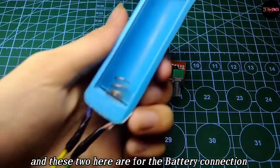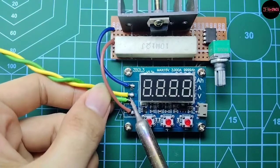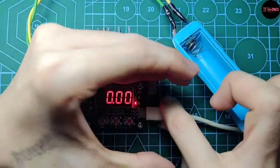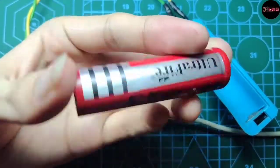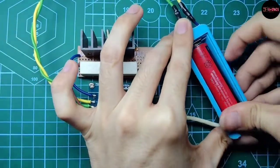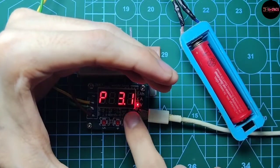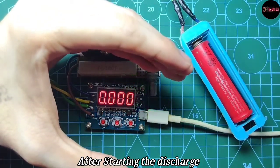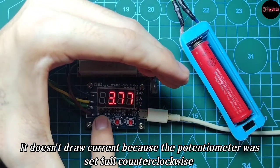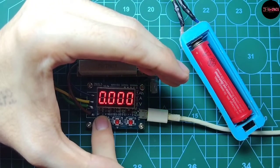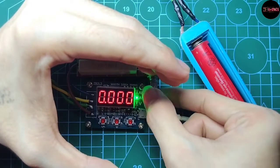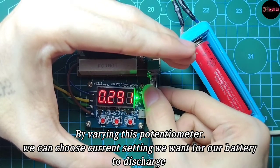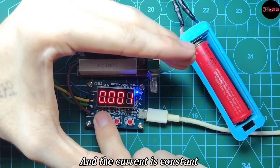And these two here is for the battery. After starting the discharge it doesn't draw current at first because of the potentiometer, but the circuit works. By varying this potentiometer we can set a current that we need for the battery to discharge, and it is constant.